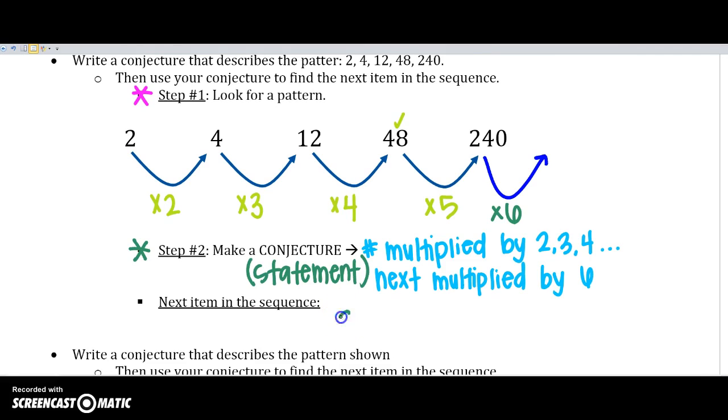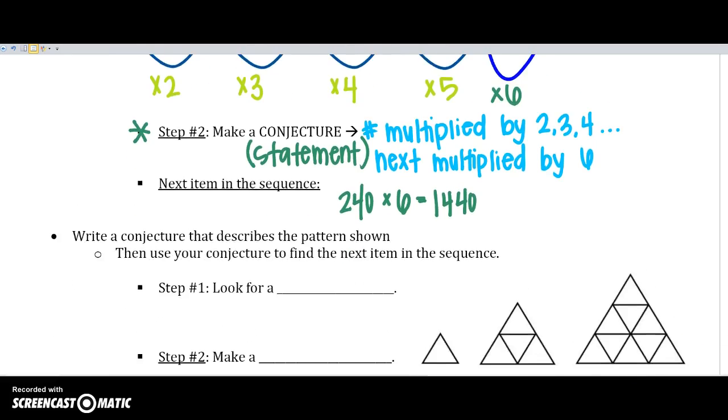So the next item in the sequence is 240 times 6, which will be 1440. And some people are better at identifying patterns than others, so you're just going to have to trial and error.